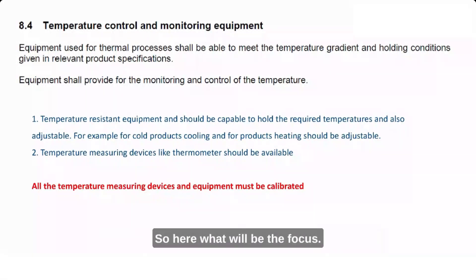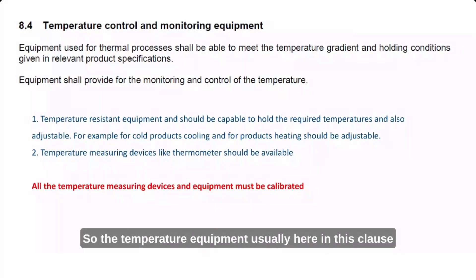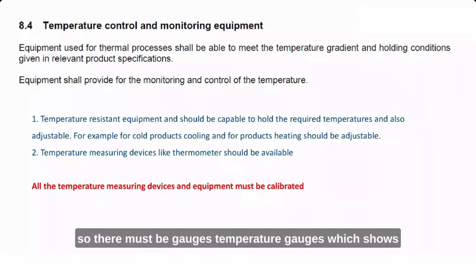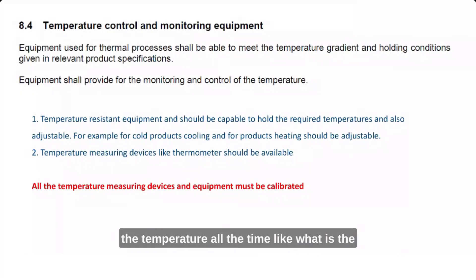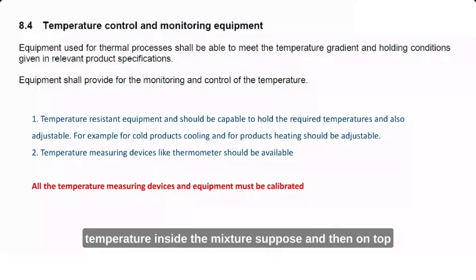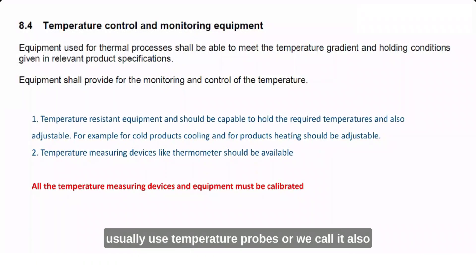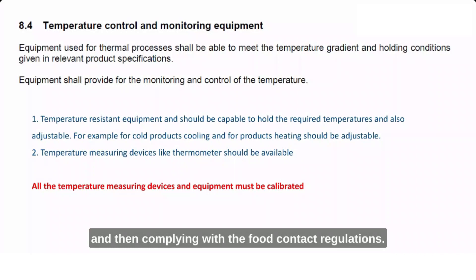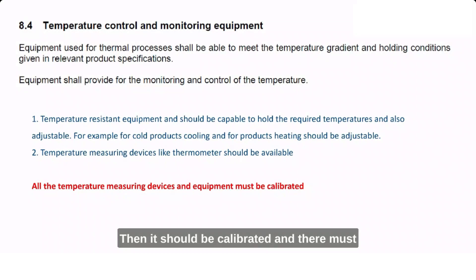Clause 8.4 is Temperature Control Monitoring Equipment. The focus here is on temperature monitoring equipment. There must be temperature gauges showing the temperature at all times — for example, inside mixers. Additionally, temperature probes or thermometers should be available. These must comply with food contact regulations, be calibrated, and calibration records or stickers must be available.